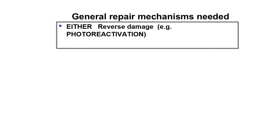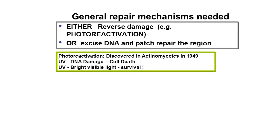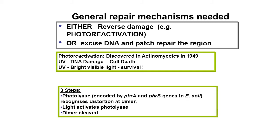General repair mechanisms either reverse damage — for example photo-reactivation — or excise DNA and patch repair the region. Photo-reactivation was discovered in actinomycetes in 1949: UV damage leads to cell death, but bright visible light with photolyase activity helps in survival. The third step is that photolyase, encoded by PHRA and PHRB genes in E. coli, recognizes the distortion at the dimer. Light activates photolyase and the dimer is cleaved.